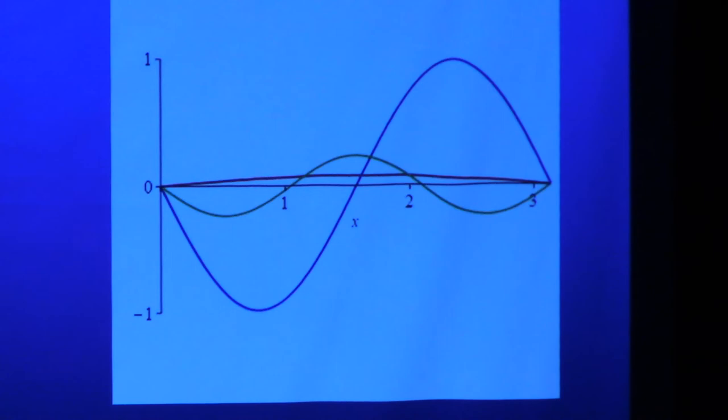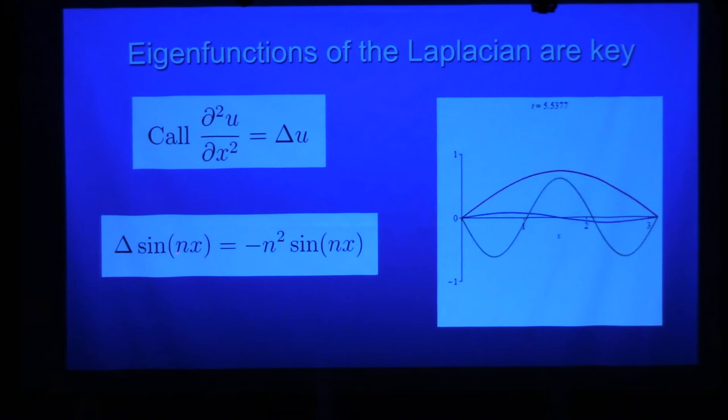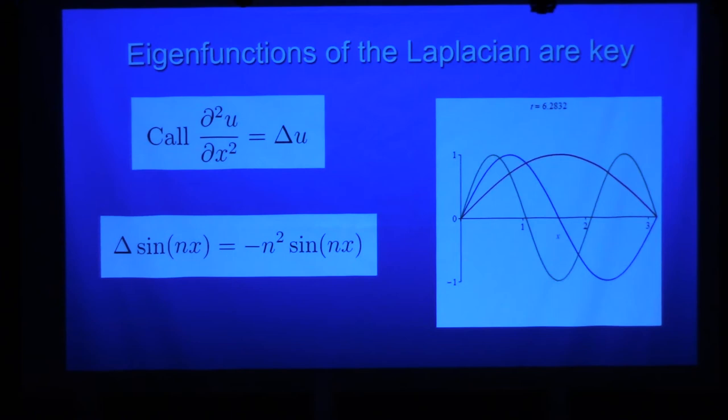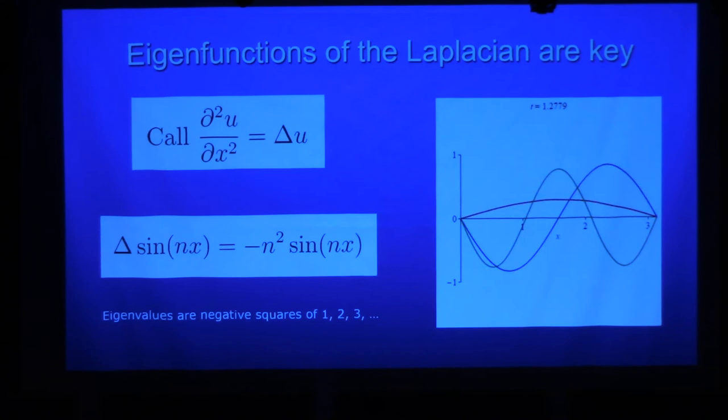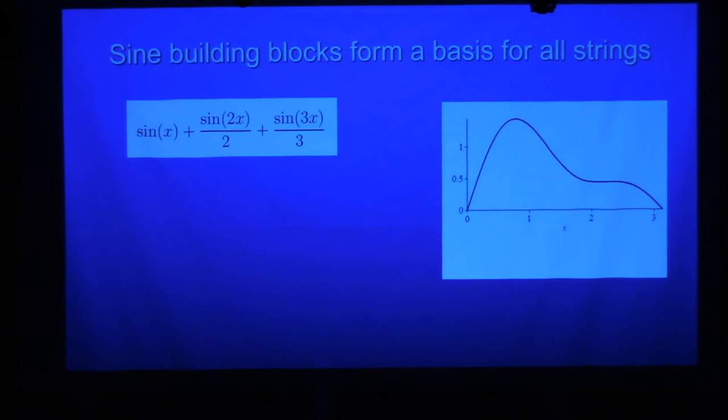These are called eigenfunctions of the Laplacian. In this context, the Laplacian is just a fancy name for the second derivative. And what does eigenfunction mean? It means you apply that operator, meaning differentiate twice, and you get a multiple of the function. German eigen to the self. These are functions that go to themselves with a little multiple here. And the eigenvalues here are the negatives of the squares of these counting numbers, one, two, three. When we think about frequencies, we're going to think about the square roots of these, the negatives of these eigenvalues. So when we think about frequencies, we're thinking about one, two, three, and so on.